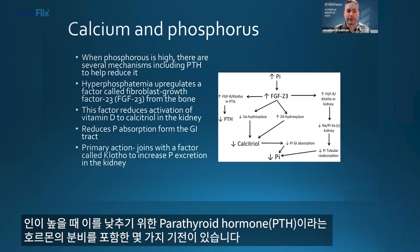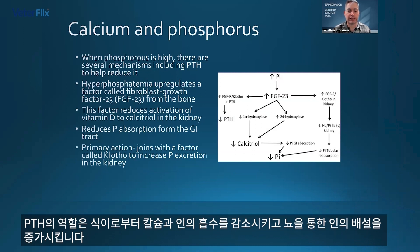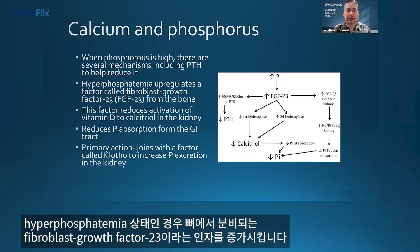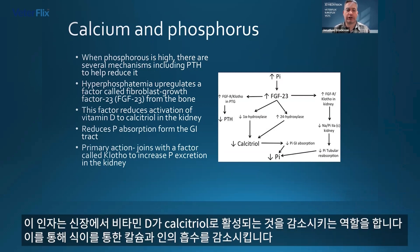So when phosphorus is high, we have several mechanisms to get it to go down again, including the secretion of a hormone called parathyroid hormone, or PTH. What PTH does is it reduces the absorption of calcium and phosphorus from the diet, and it increases the excretion of phosphorus in the urine. When we have hyperphosphatemia, it also upregulates a factor called fibroblast growth factor 23 (FGF-23), which is excreted from the bones. This factor acts to reduce the activation of vitamin D to calcitriol in the kidney.